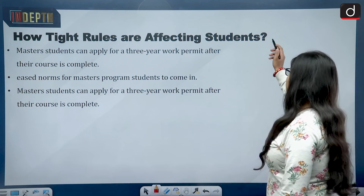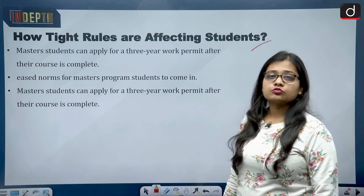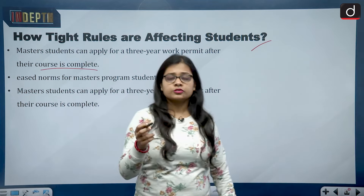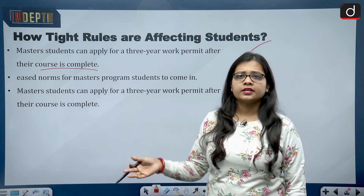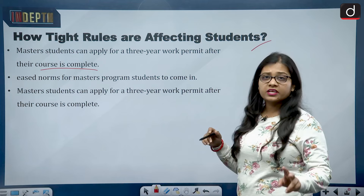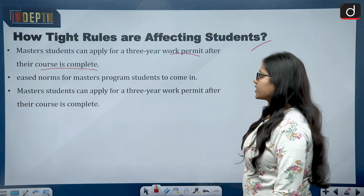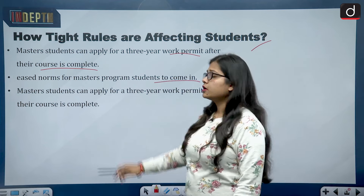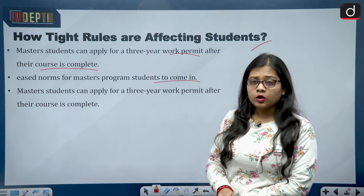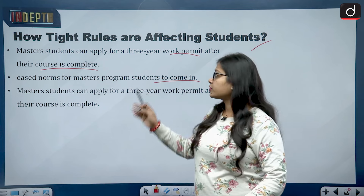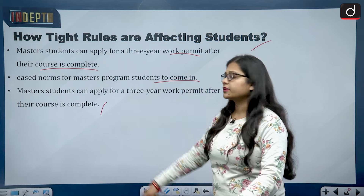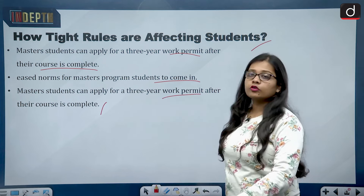How are tight rules affecting students? Master's students can apply for a three-year work permit after their course is complete. So a student who has completed a bachelor's in India and then goes abroad for a master's can, after completing their master's, apply for a three-year work permit. Norms have been eased for master's program students. Bachelor students, however, might face problems with work visas, student visas, or spouse work permits.